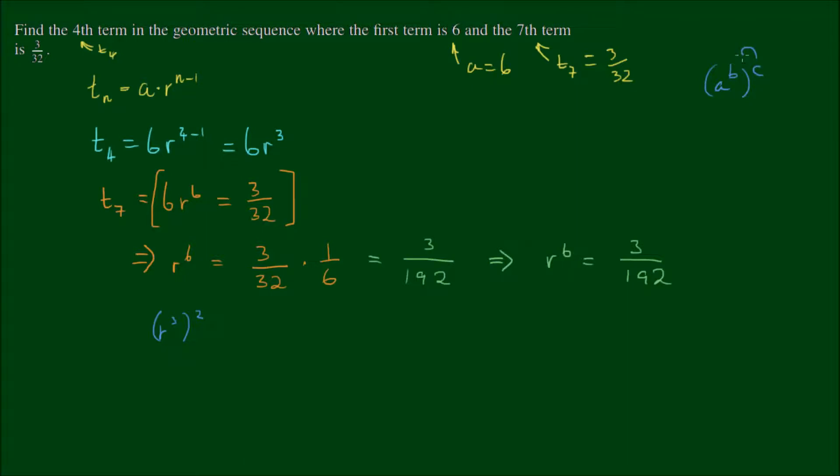So that's just going by the index law that a to the power of b, then to the power of c, we can just put the power of c into the parentheses and say that a to the power of b times c. So we're saying that r to the power of 6 is equal to r cubed squared, and that's equal to 3 on 192.